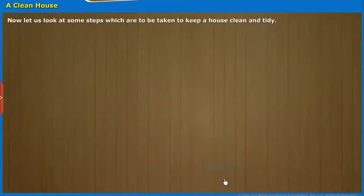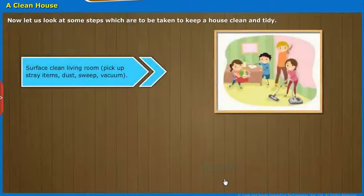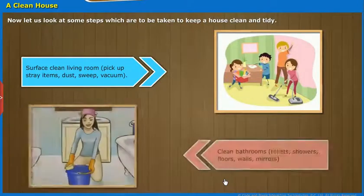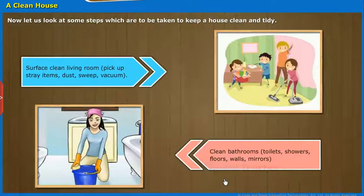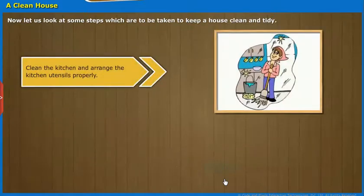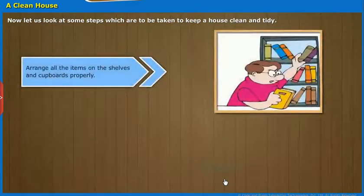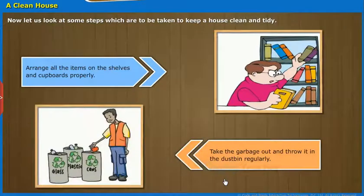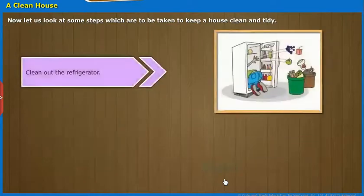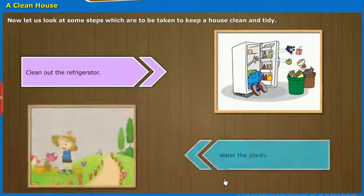Now let us look at some steps which are to be taken to keep a house clean and tidy. Surface clean the living room: pick up stray items, dust, sweep, vacuum. Clean bathrooms, toilets, showers, floors, walls, and mirrors. Clean the kitchen and arrange the kitchen utensils properly. Clean all interior windows. Arrange all the items on the shelves and cupboards properly. Take the garbage out and throw it in the dustbin regularly. Clean out the refrigerator. Water the plants.